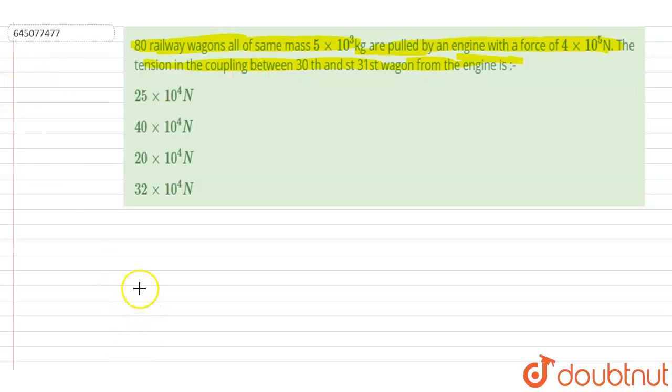So if I make the engine, let's say this is the wagon with the engine. We want the tension at this part right after the 30th. Here this is the 30 and this is the 31. So before it there are 30 wagons and after it there are 80 minus 30, that is 50 wagons.